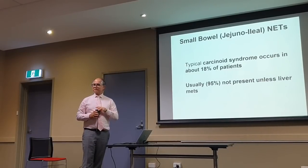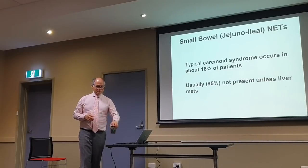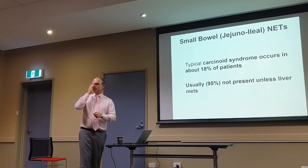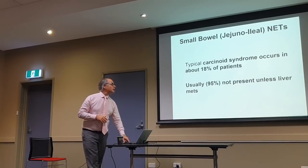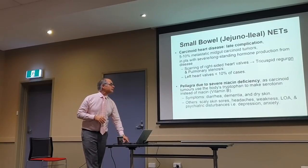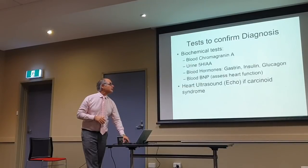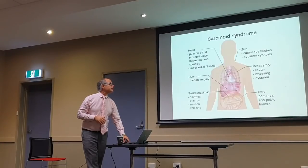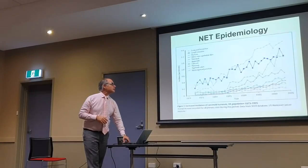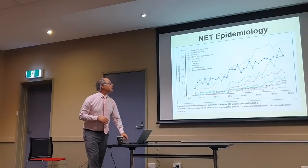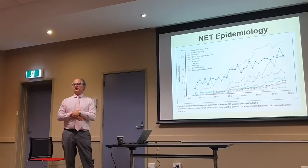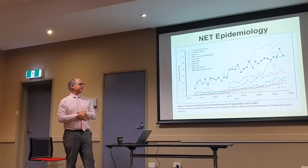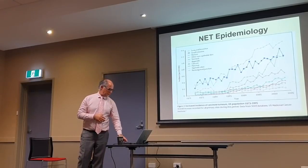Regarding the growth chart showing the rise of different forms of NETs — where was the thymic NET? Was that included? Thymic NETs probably come under the lung focus — that sort of area.